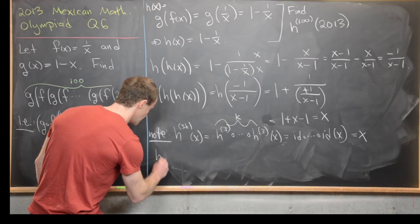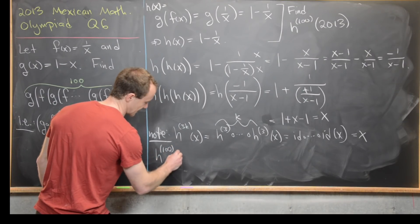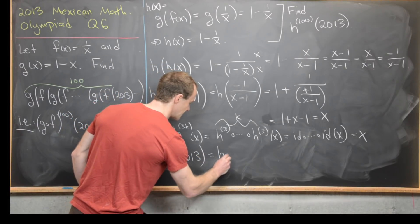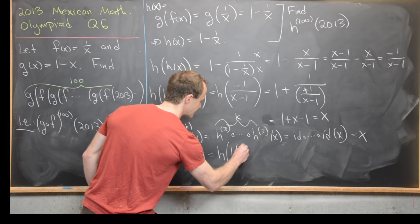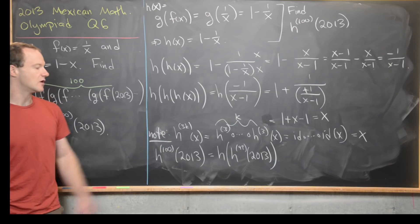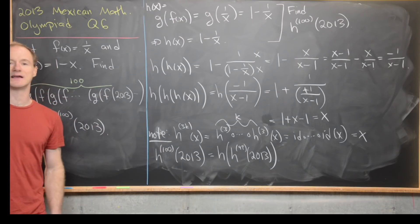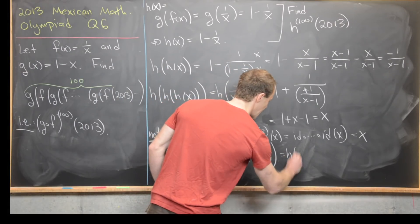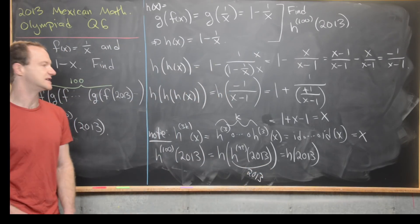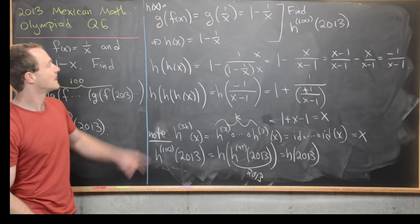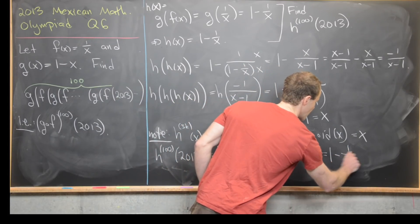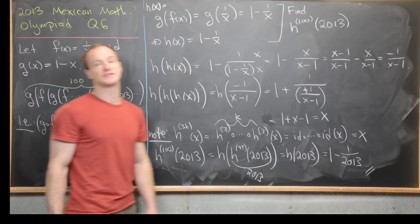Now we take h composed with itself 100 times, evaluated at 2013. We split it as h∘(h^99) evaluated at 2013. Since 99 = 3×33, h composed 99 times is just the identity, giving us 2013. So we have h(2013) = 1 - 1/2013. That finishes the solution.